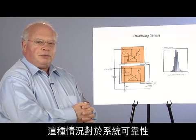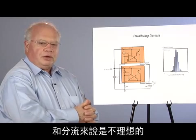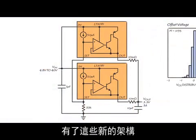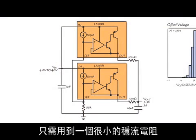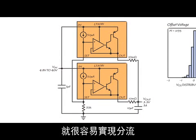It's not a good situation for reliability and for good current sharing. With these new architectures, where they're hooked up as a follower, it's easy to make them current share just using a very small ballast resistor.